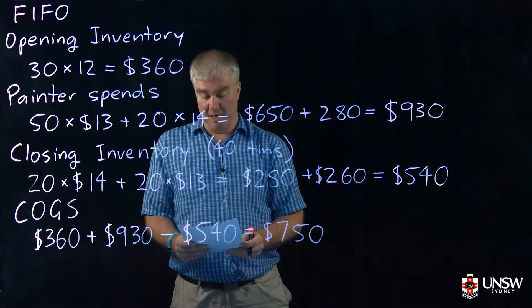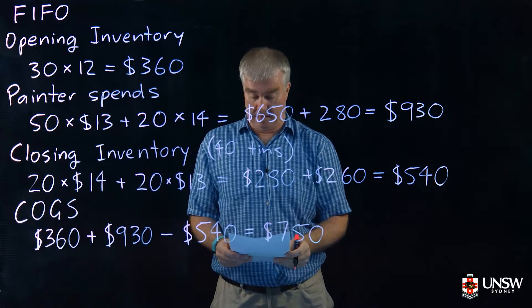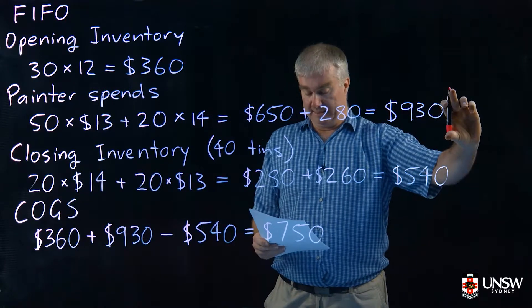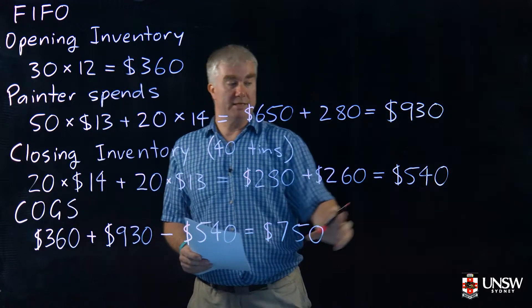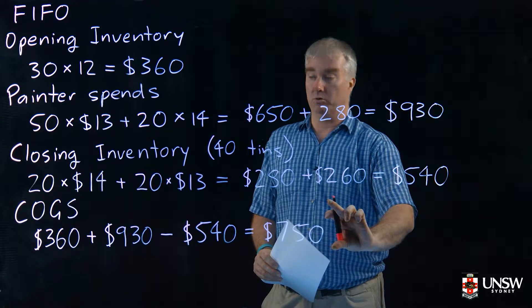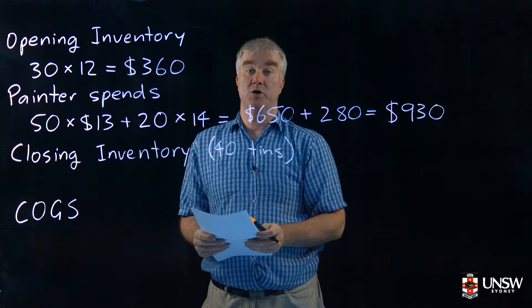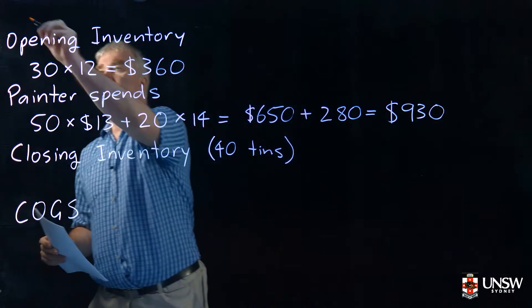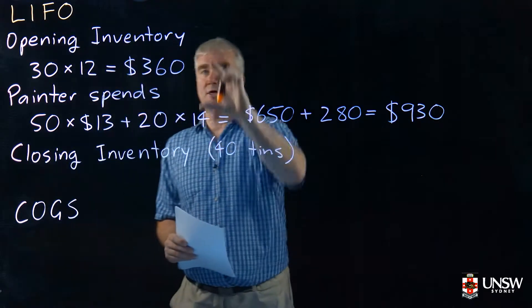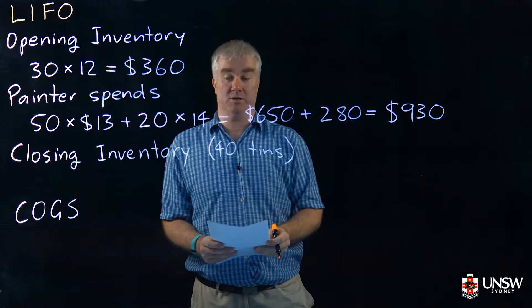For LIFO, the opening inventory is going to stay the same at $360. The amount that we've spent of course stays the same at $930. However, the closing inventory is going to be different, and so will our cost of goods sold. This time we're calculating using LIFO, the last in first out method.